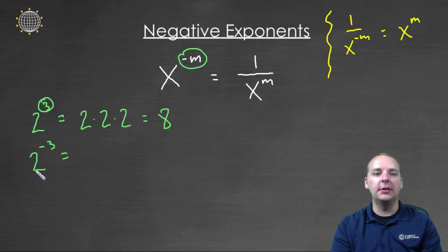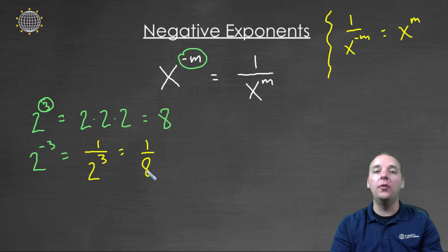So anyways, this really helps us, right? Because now we know that two to the negative three is defined as one over two to the positive three, which of course is one eighth. Not eight, but one over eight. So that's all very clear.